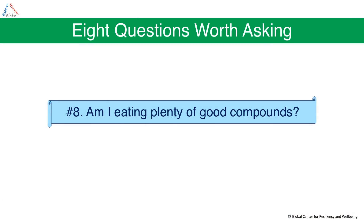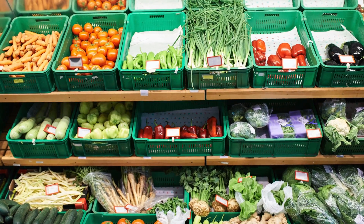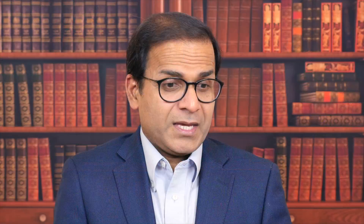Finally, the eighth question: am I eating plenty of good compounds? Am I eating enough fruits and vegetables? Am I enjoying all the different colors in my diet from natural fruits and vegetables? Maybe add a little turmeric, some spices, coriander, cilantro — herbs that are wonderful for the immune system. The more you can make your diet healthy and add variety to it, the better it will be for your immunity.